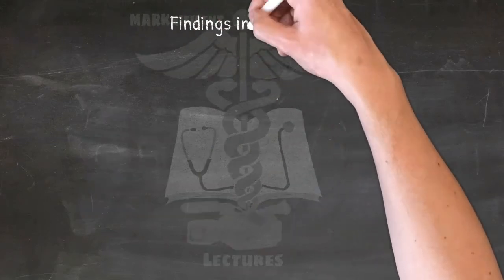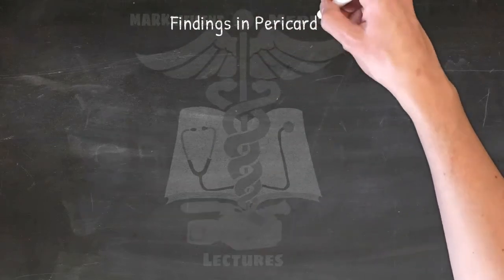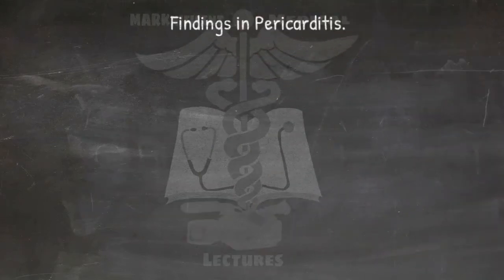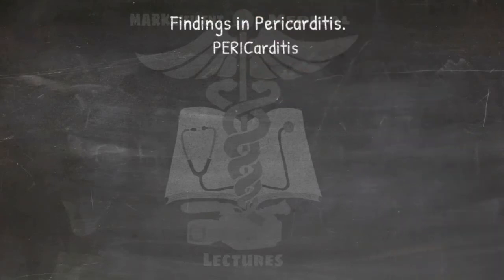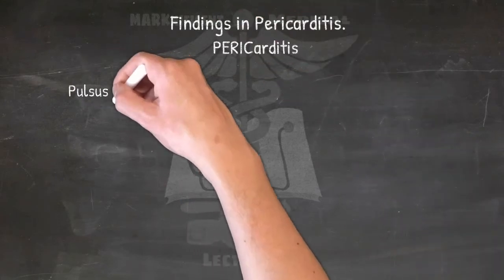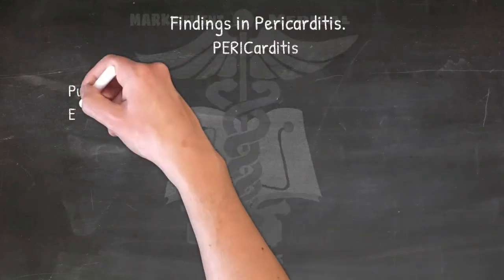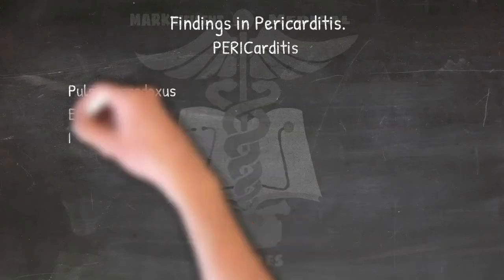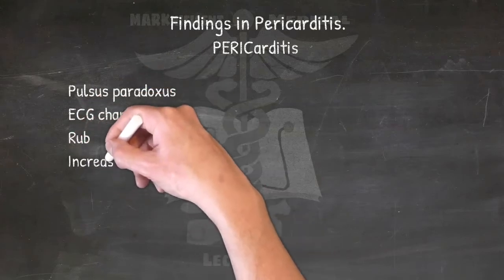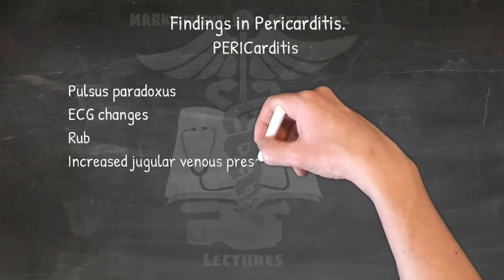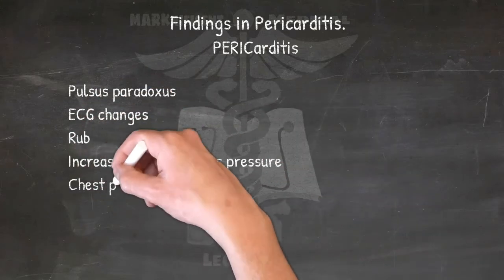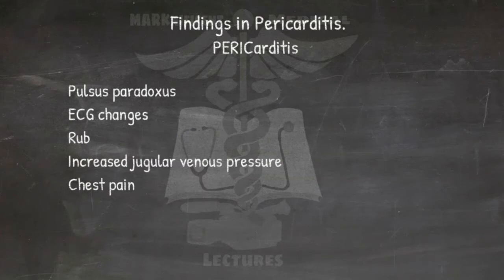Findings in pericarditis: PERICARDITIS — Pulsus paradoxus, ECG changes, Rub, Increased jugular venous pressure, and Chest pain which worsens on inspiration but is better when leaned forward.